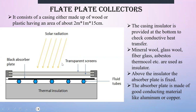A casing insulator is provided at the bottom to prevent conductive heat transfer. Mineral wool, glass wool, or fiberglass are used as insulators. Above this insulator, you can see the absorber plate that is fixed. This absorber plate is made up of copper or aluminum, which is a good conductor, and it is coated with black to increase its absorption property. This black coating is done by chemical treatment to allow maximum absorption of radiation and minimum emission.